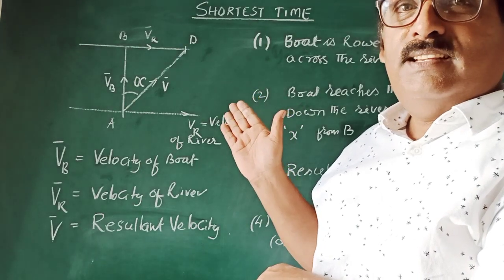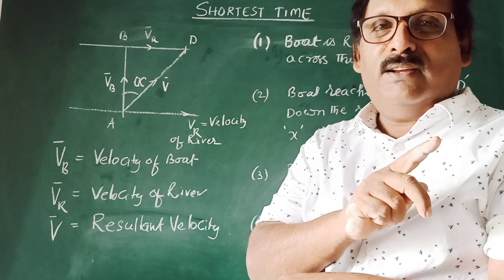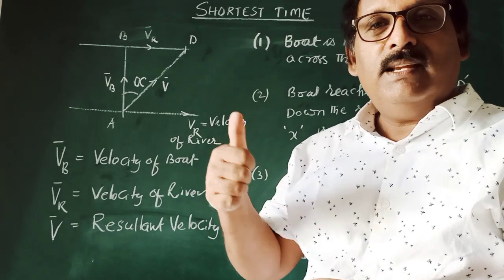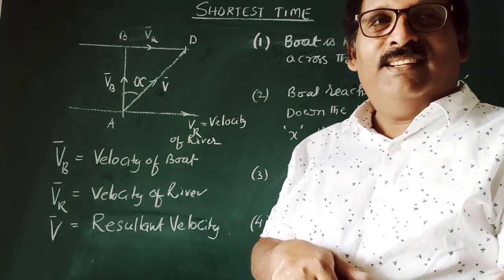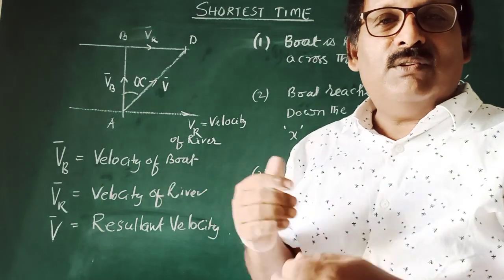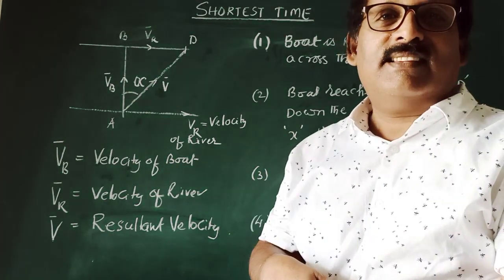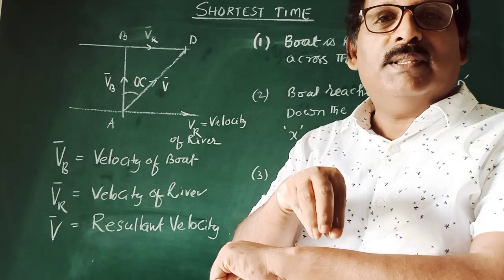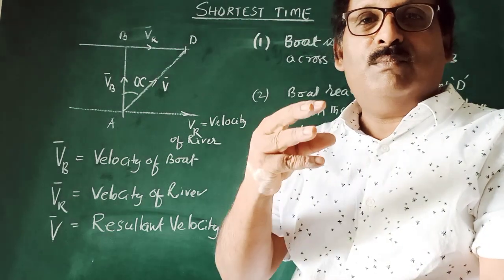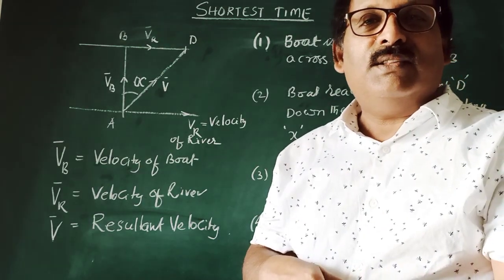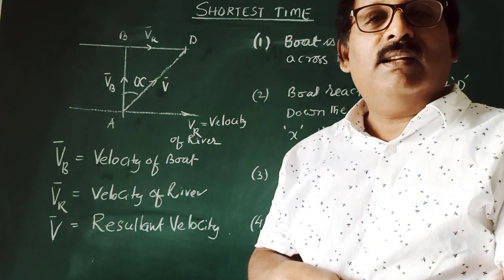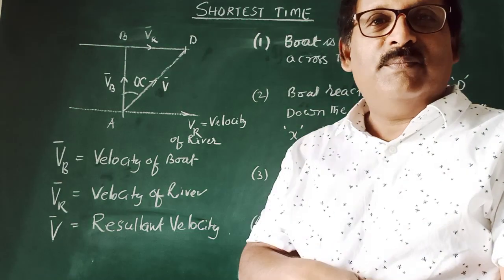You have to cross this river with the help of a boat. The river is flowing from left to right with a velocity. You can operate the boat with any desired velocity. Time depends upon the resultant velocity, which depends on velocity of the boat and velocity of the river. More the velocity, the less the time, since distance is the same.